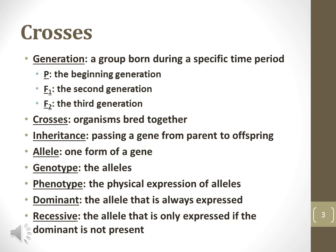Other important terms include inheritance, which is the process of a gene passing from a parent generation to offspring. Allele refers to a particular copy of a gene; genes are different because their DNA sequences are different. The term genotype refers to the genetic makeup of an organism, while phenotype refers to the physical expression of alleles causing observable differences in an organism. Dominant alleles are always expressed, while recessive alleles are only expressed if dominant alleles are not present.